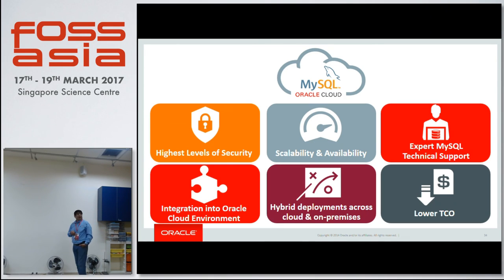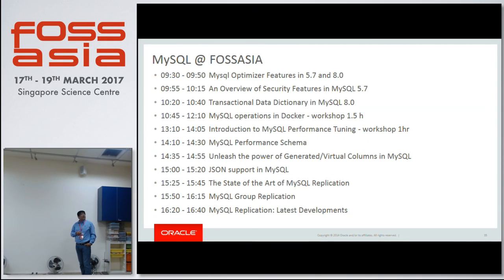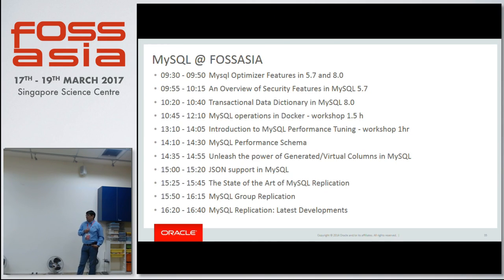Cloud is an expensive solution — you have to do your own analysis. That's the last slide of my session — what else is there. We've got optimizer features, security features, transactional data dictionary, a Docker workshop, performance tuning, and performance schema. Performance schema is where you want to tune your information.